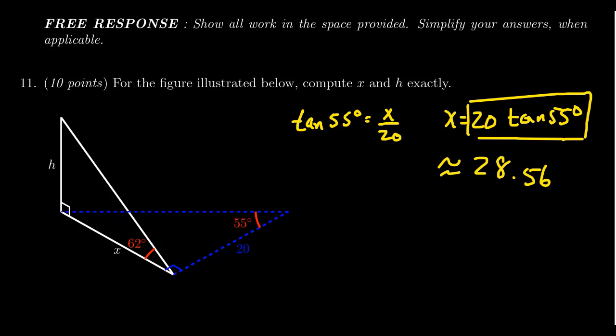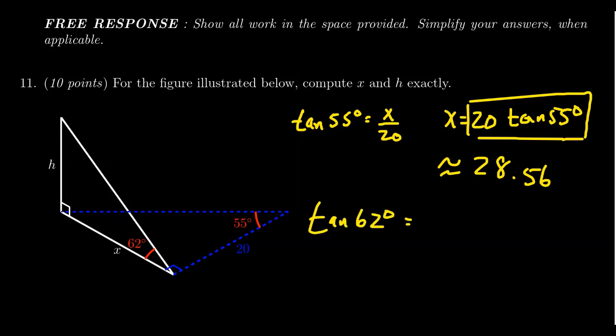So we found X. Now let's look for H. Looking at the white triangle, we now know the adjacent side because we solved for X, and we want to find the opposite side. We'll again use a tangent ratio: tangent of 62 degrees equals H over X.